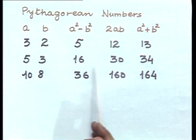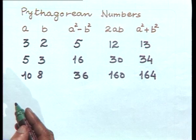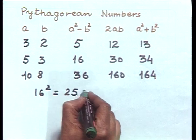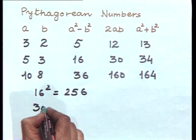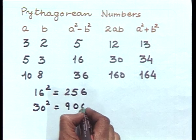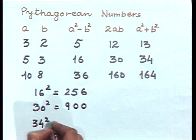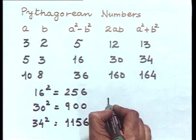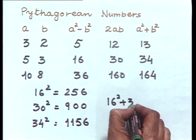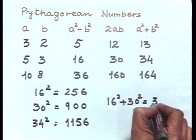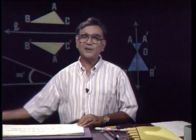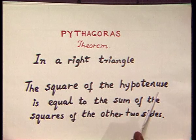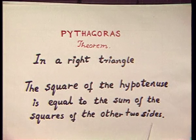Let us take the triplet 16, 30, and 34 and examine whether they satisfy the property. Now, 16² = 256, 30² = 900, and 34² = 1156. And indeed, 16² + 30² = 1156, which equals 34². So the Pythagorean triplet property is satisfied. Let us read Pythagoras theorem once again: in a right triangle, the square of the hypotenuse is equal to the sum of the squares of the other two sides.